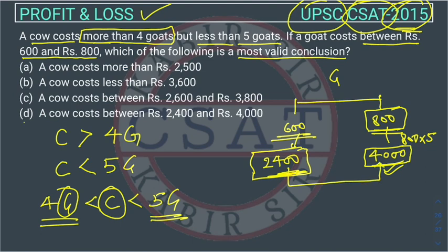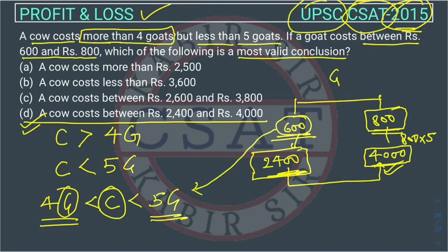So conclusion D is correct. Some people may get confused about why we multiply 600 with 4 and not 800, and vice versa. You can substitute 600 into the equation — the cow price range becomes greater than 2400 — and if you put 800 into the same equation, the other boundary comes out.